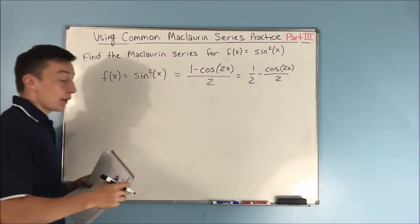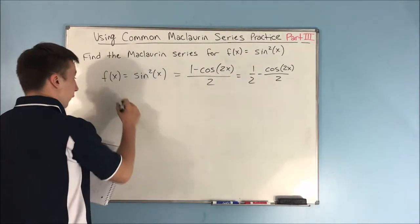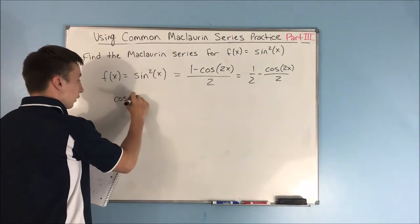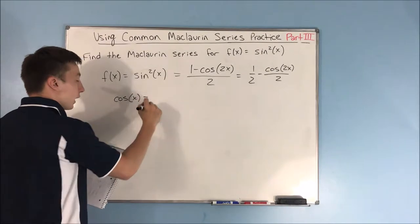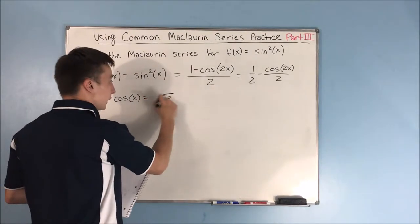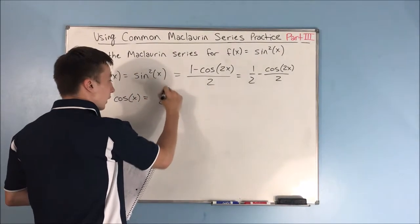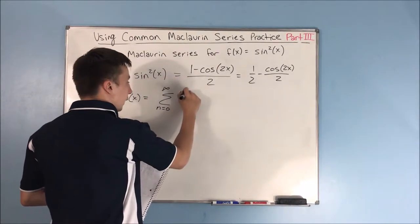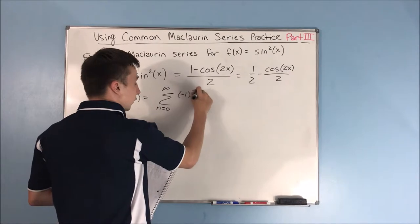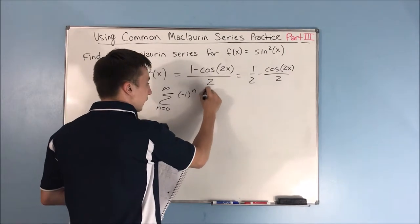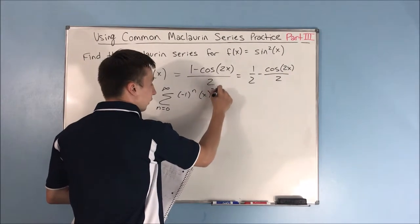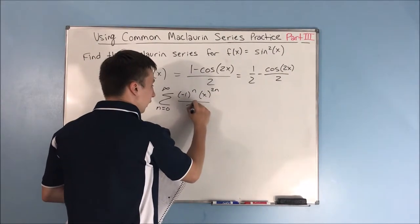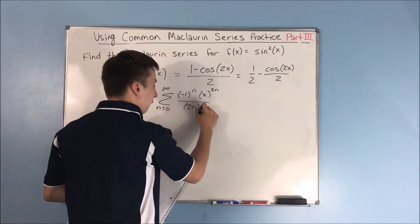If we're trying to work with 1 half minus cosine of 2x over 2, what we can do is start off with cosine of x. Cosine of x is equal to the sum from n equals 0 to infinity of negative 1 to the n times x to the 2n over 2n factorial.